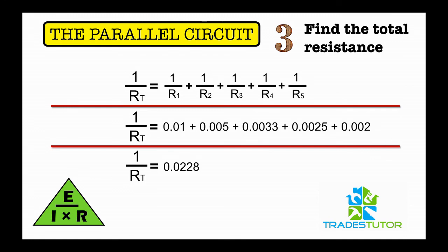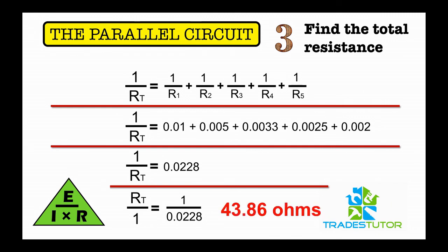So that is one over 0.0228, and that works out to be 43.86 ohms. And there you have it—the parallel circuit, everything you need to know.